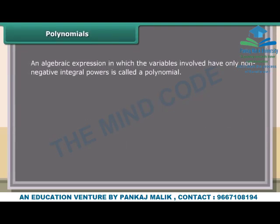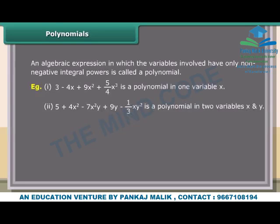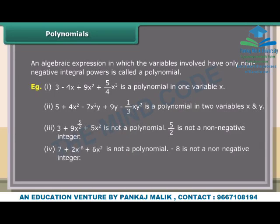Polynomials: An algebraic expression in which the variables involved have only non-negative integral powers is called a polynomial. Example 1: 3 − 4x + 9x² + (5/4)x³ is a polynomial in one variable x. Example 2: 5 + 4x² − 7x²y + 9y − (1/3)xy² is a polynomial in two variables x and y. Example 3: 3 + 9x^(5/2) + 5x² is not a polynomial since 5/2 is not a non-negative integer. Example 4: 7 + 2x^(−8) + 6x² is not a polynomial since −8 is not a non-negative integer.